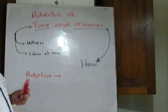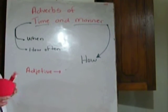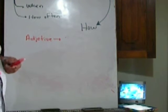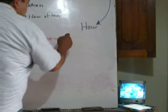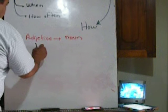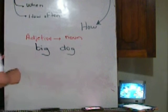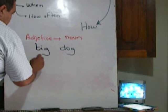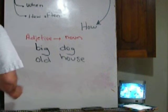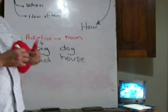Let me try to explain to you how these things work. If you remember what an adjective is — an adjective is a description of a noun. For example: big dog, old house. So the adjective describes the noun.